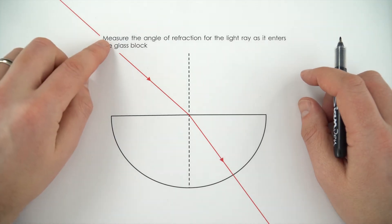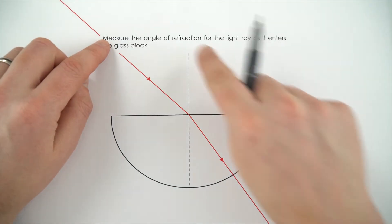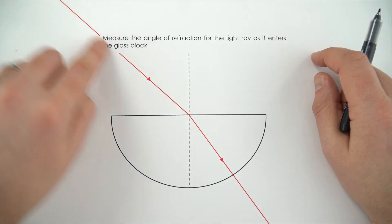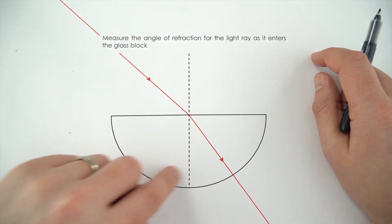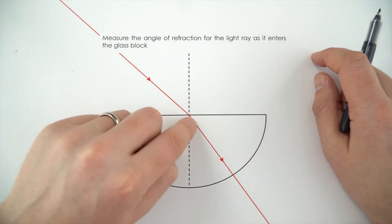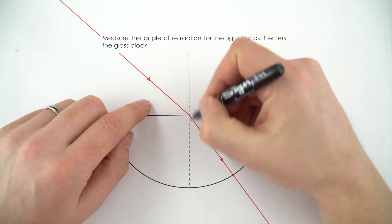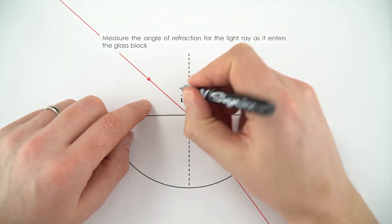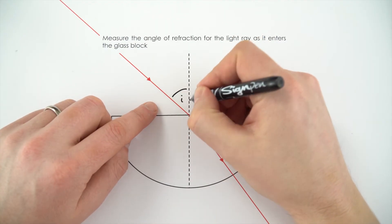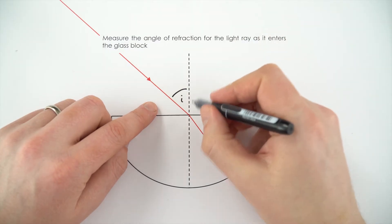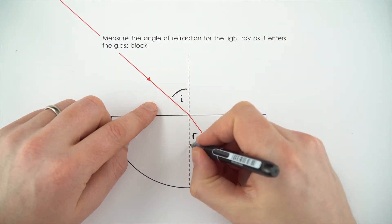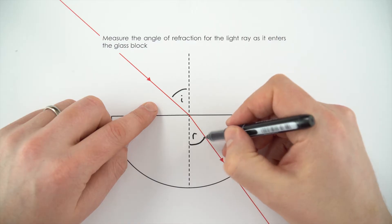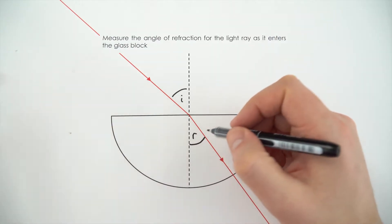In this example we need to measure the angle of refraction. We have a ray of light that enters a semicircular block and as it does it bends. The dotted line here is the normal. The angle of incidence is between the ray of light and the normal, and then the angle of refraction is between the normal and the ray of light that bends here. So this is the angle that we're looking for.